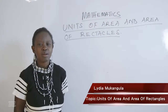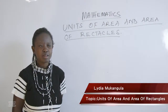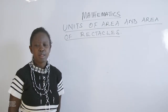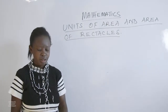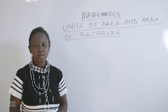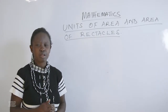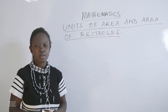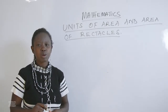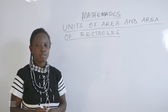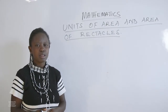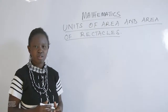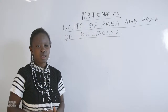Hello there. Welcome to today's lesson. We are looking at units of area and area of rectangles. Before we look at that, we want to remind ourselves what we looked at in our previous lesson. In the previous lesson, we were looking at perimeter, and we simply said that perimeter is the distance around the outside of a figure.